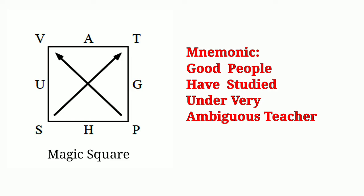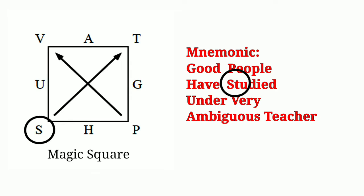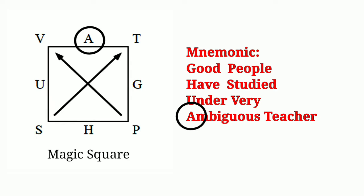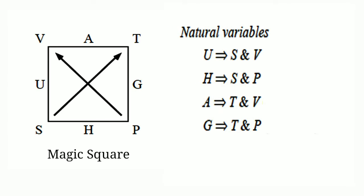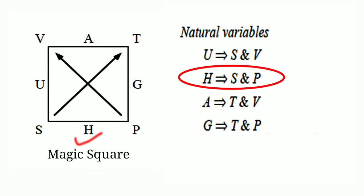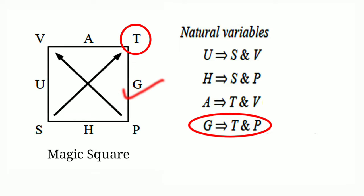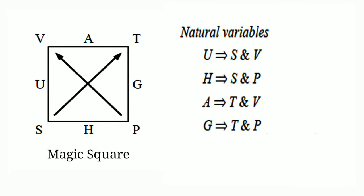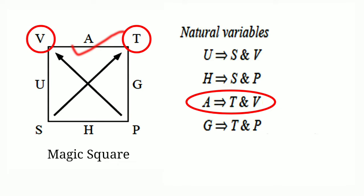Now place the first alphabet of each word in order like this: G, P, H, S, U, V, A, T. Now from this magic square we can find that internal energy U is a function of S and V. Enthalpy H is a function of S and P. And Gibbs free energy G is a function of T and P, while the Helmholtz free energy A is a function of T and V.